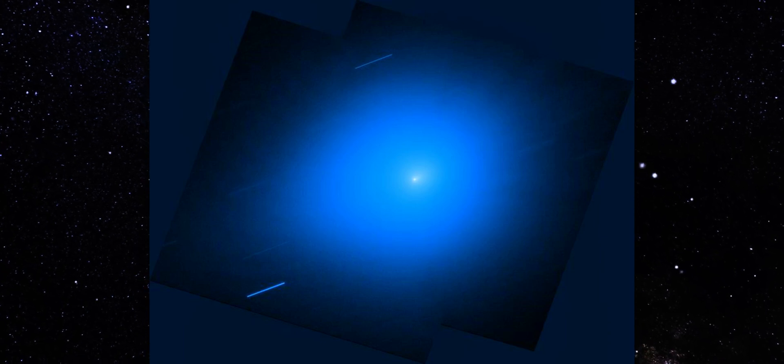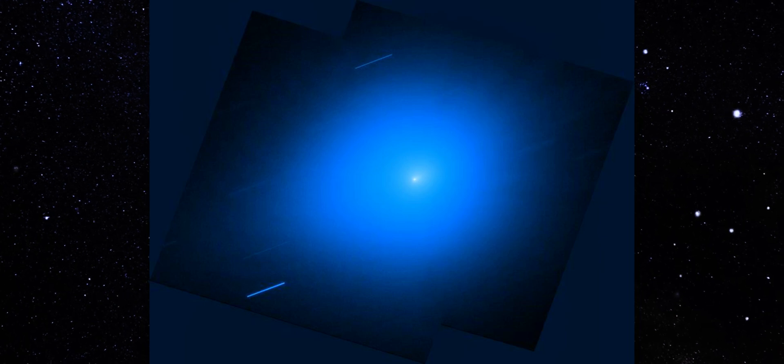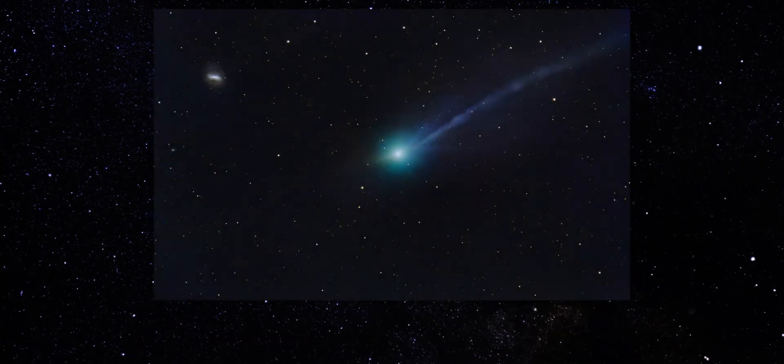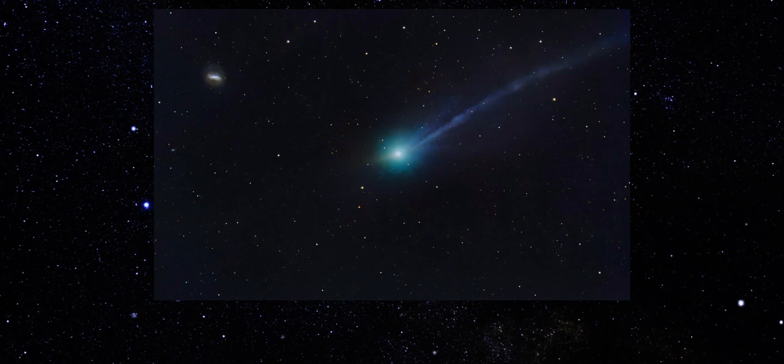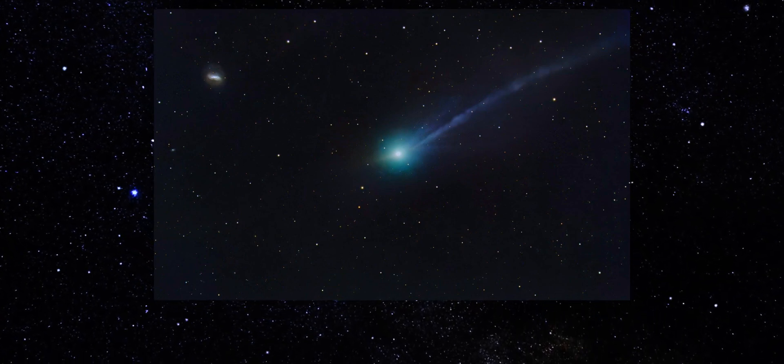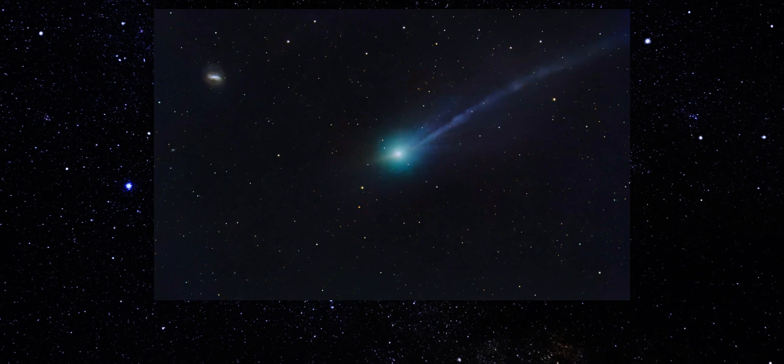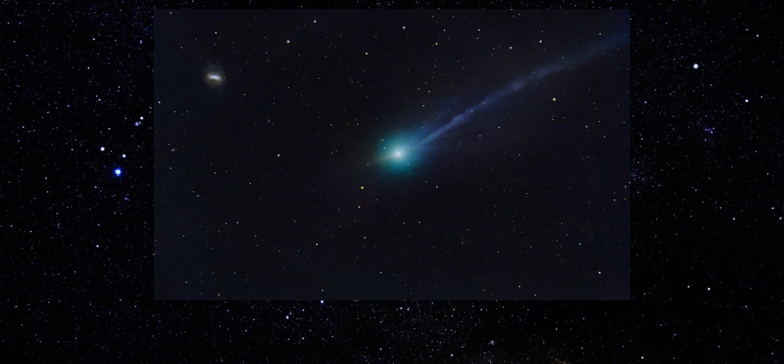Now we hit the point where today's biggest change becomes impossible to miss. This is the rotational gradient version of the same frame. This filter wipes away the soft coma, stripping it down until only directional features remain. And look at what leaps out. A bright, narrow plume pushing outward on one side, paired with a thinner, fainter structure pointing in the opposite direction.